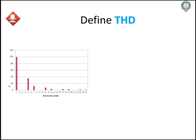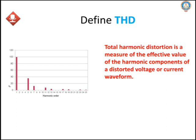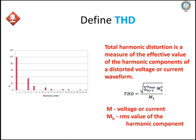Define Total Harmonic Distortion. Total Harmonic Distortion (THD) is a measure of the effective value of the harmonic components of a distorted voltage or current waveform, given by THD = √(Σ from h>1 to h_max of Mh²) / M1, where M1 refers to the fundamental voltage or current and Mh refers to the RMS value of the harmonic component.